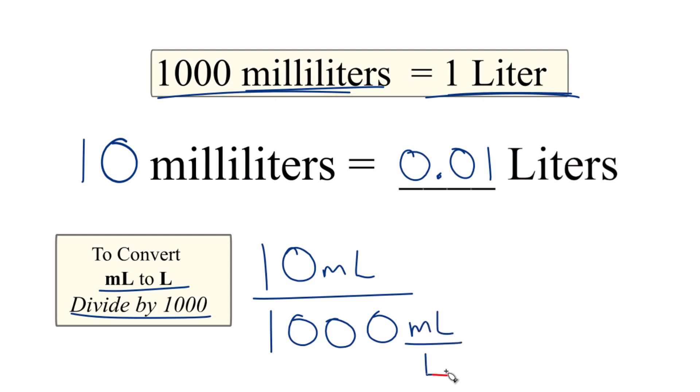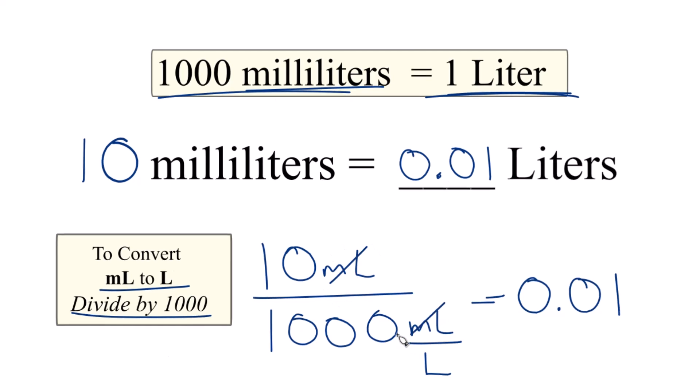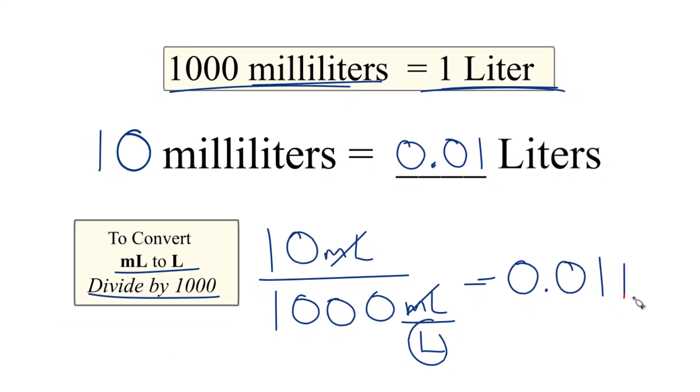Now when we divide, 10 divided by a thousand equals 0.01, and we have milliliters on top and on the bottom - they cancel out, we're left with liters, just like we found before.